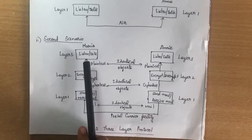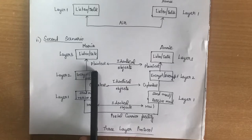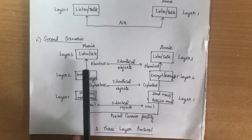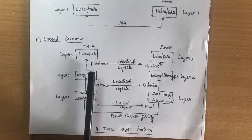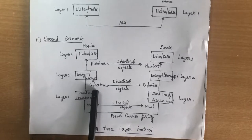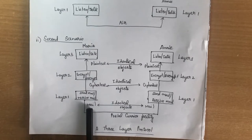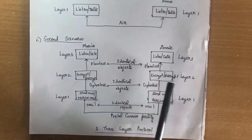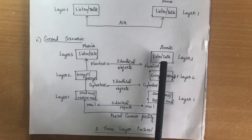They divided the problem into three layers. First, they prepare a plain text message they want to send to Annie. Then they use encryption techniques to convert it into cipher text so no one can decrypt their message. In layer one, they put the cipher text into a mailbox and send it through the postal service to Annie's location. Annie then receives the mail, takes the cipher text, and converts it back into plain text to read the message.